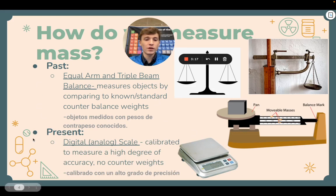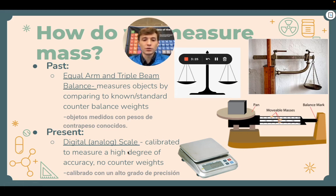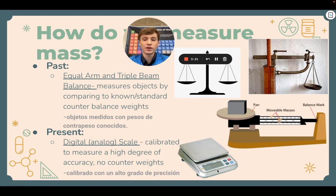Nowadays we use what's called a digital or analog scale. This is calibrated to a high degree of accuracy with Earth's gravity, no counterweights are required, and it reads a very clear number on a display.